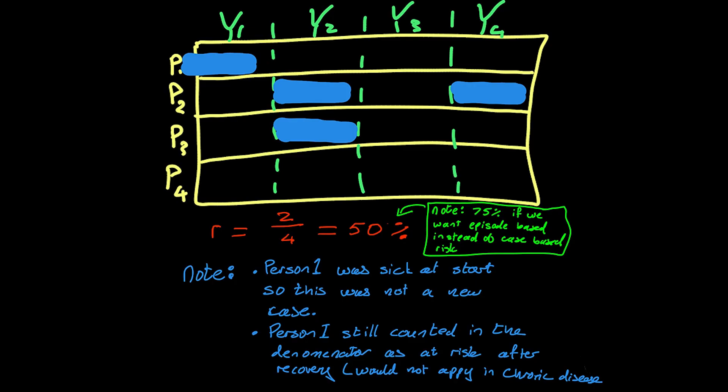A couple of other things to keep in mind. When we talk about risk, the denominator is the people that are at risk at the beginning of the time period. But person 1 was sick at the beginning of the time period, and so strictly speaking, at that point in time, not really at risk, depending on the disease. But for most diseases, not at risk of getting sick then, because they were already sick with whatever disease we're talking about. Most diseases, you can only have it once at a time. In this case, we would still count person 1 in the denominator, because they recovered from the illness and then continued to be at risk of getting sick during the rest of the four years. But this is where subject matter expertise matters.